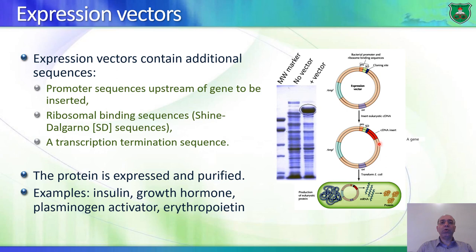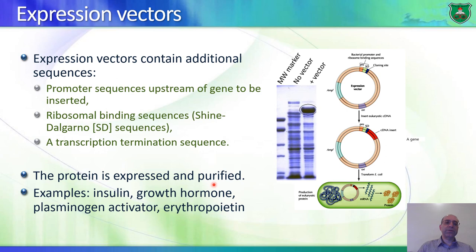We insert the expression vector inside bacterial cells, and these cells produce many, many copies of the protein of interest, which can then be purified. We can produce many different types of human proteins inside bacteria, such as insulin and growth hormones, which can be given to patients.